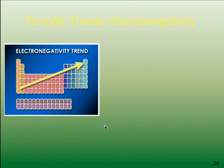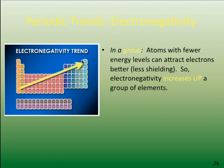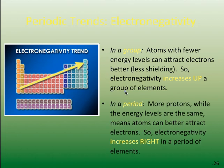Periodic trends in electronegativity: the most electronegative is fluorine, with a relatively high Z-effective and very few inner electrons. In a group, atoms with fewer energy levels — meaning less shielding — have the highest electronegativity, so electronegativity increases going up a group. In a period, electronegativity increases with the number of protons or Z-effective. So electronegativity increases up and to the right.